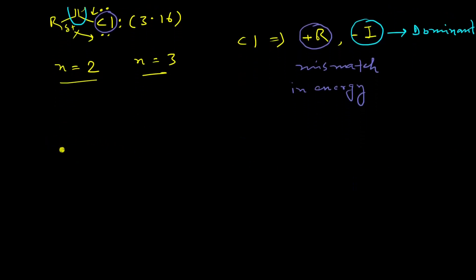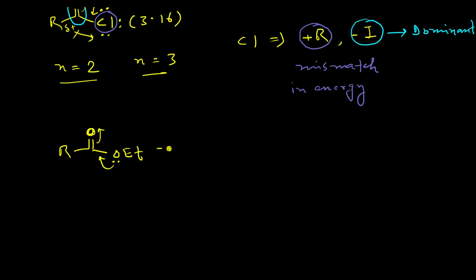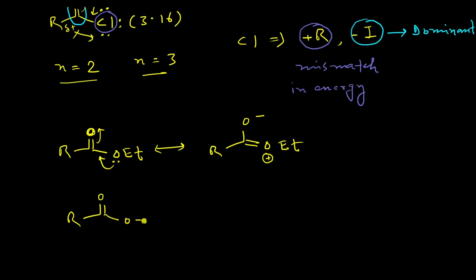Now consider the ester molecule. In esters, conjugation between the sp2 oxygen, the carbonyl carbon, and the adjacent oxygen is very prominent because all atoms have principal quantum number 2 for their outer shells, so there is no orbital energy mismatch. This conjugation stabilizes the adduct. However, this conjugation does produce some charge separation, which means the sp2 oxygen of an ester is moderately — but not maximally — nucleophilic.